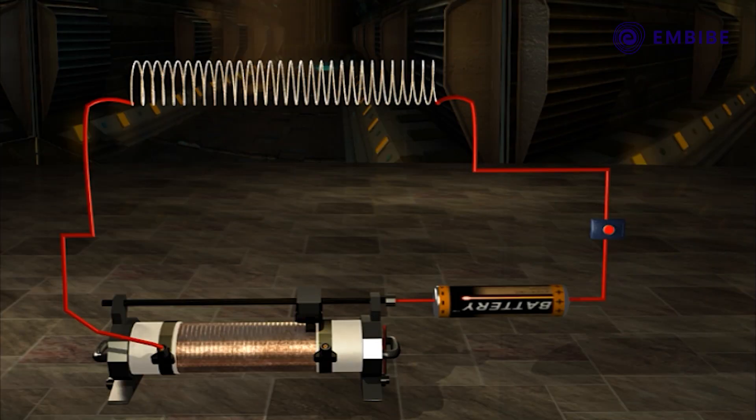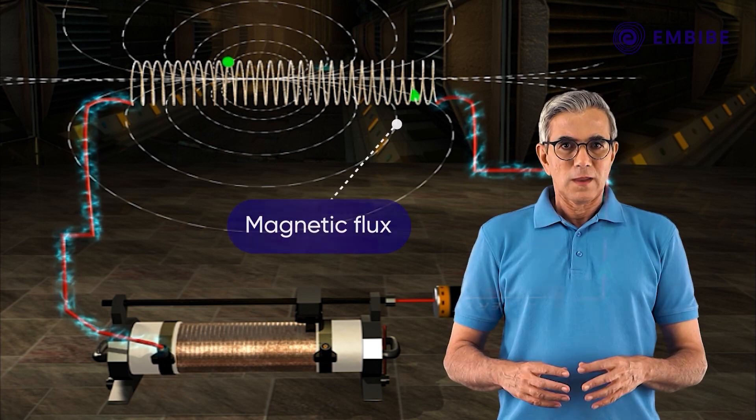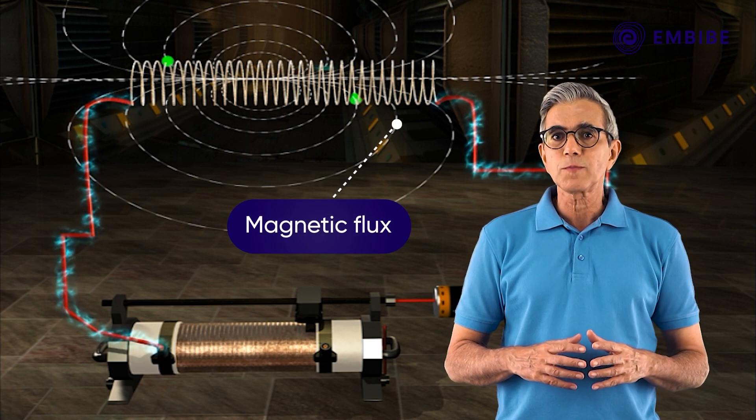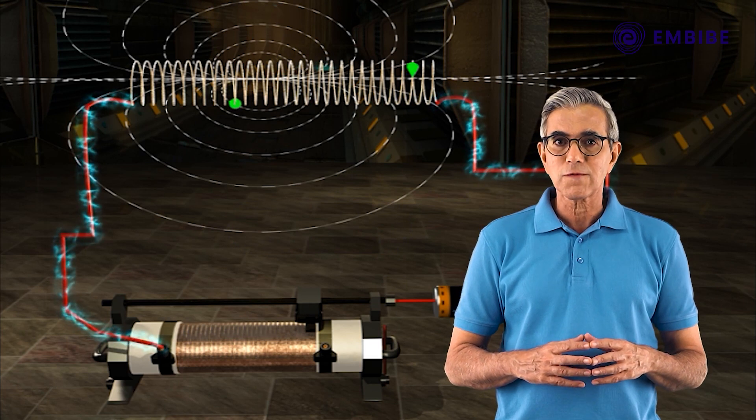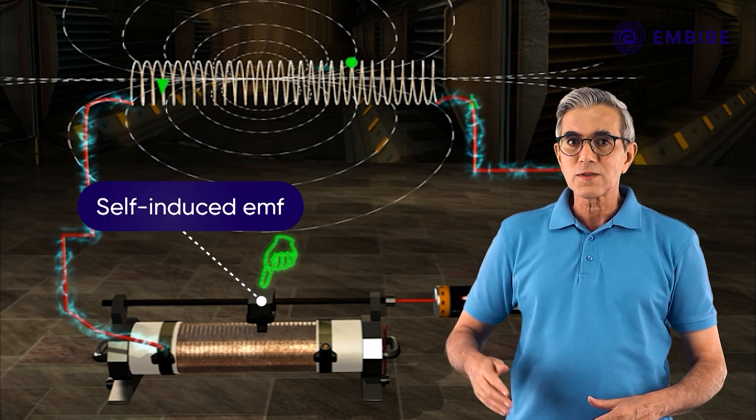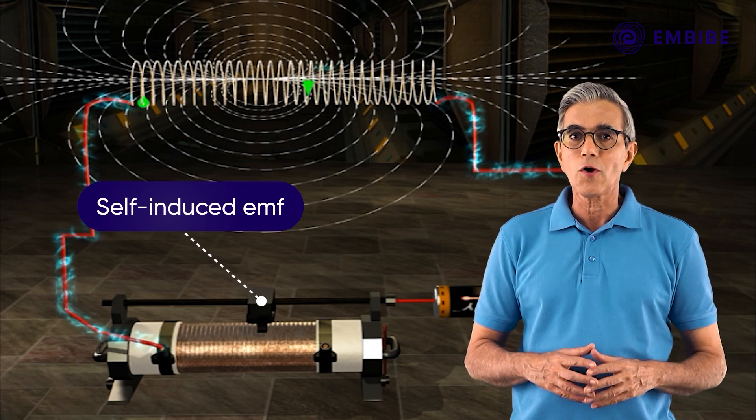When a current passes through a coil, some magnetic field is created so that the coil itself behaves like a magnet. The magnetic flux produced by the current in the coil is linked with the coil itself, and when the current in the coil changes, this flux linked with the coil also changes.